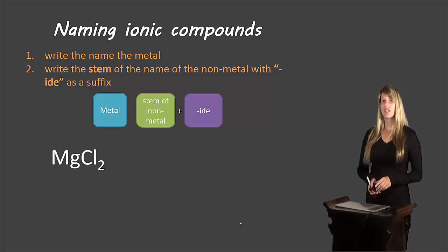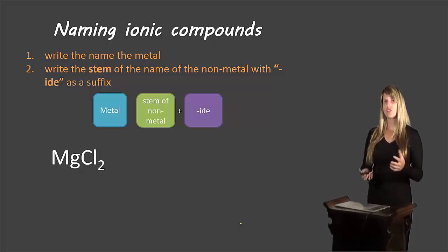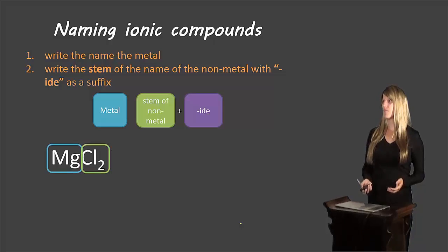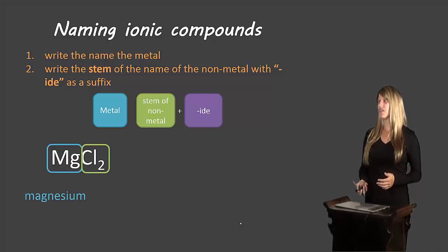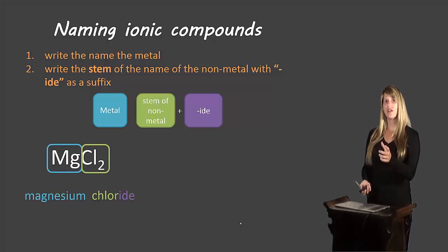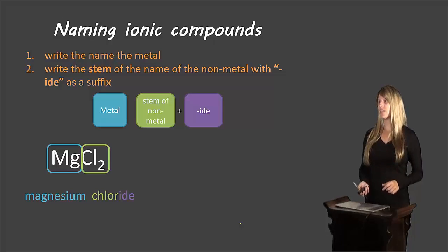So let's take a look here. Magnesium and chlorine are the two elements that we're dealing with. The metal gets its normal name, and the non-metal, the chlorine, we just use the stem. So chlorine, the stem is chlor, we get rid of the i-n-e, and we would add an i-d-e. So magnesium stays as it is, chlorine turns to chlor, and then we add the i-d-e.